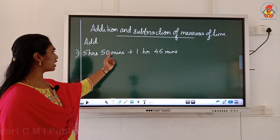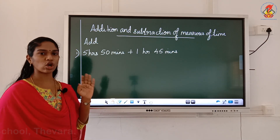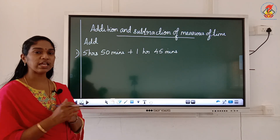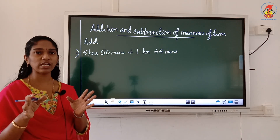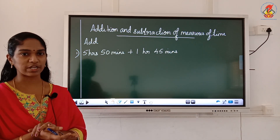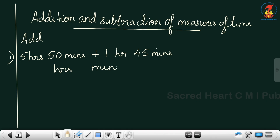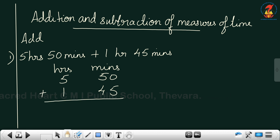First question: 5 hours 50 minutes plus 1 hour 45 minutes. Here we are not going to do it like normal addition or subtraction. We have to do it separately — first you will add the minutes separately, then you will add the hours separately. So here I write hours and here I write minutes. First one is 5 hours 50 minutes and second one is 1 hour 45 minutes.